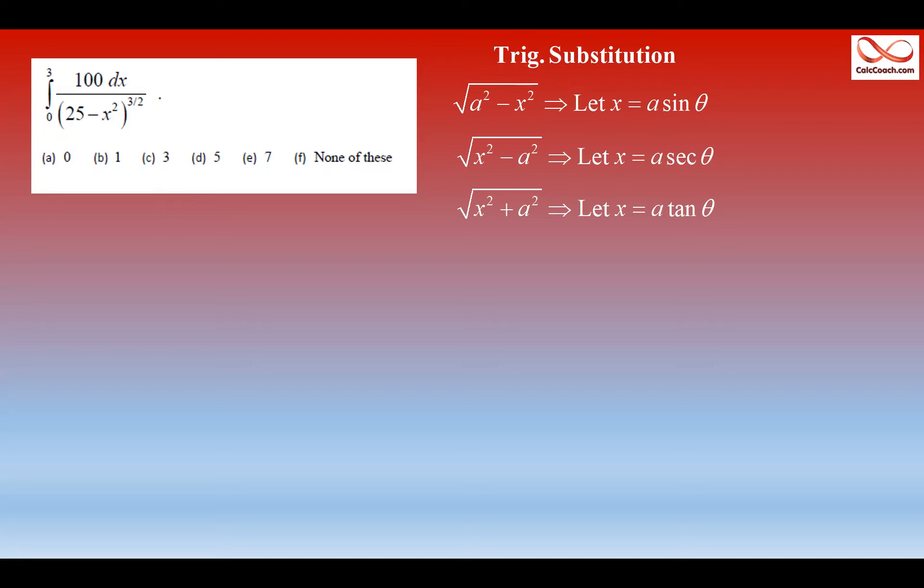So we have to basically recast the three halves power as a square root, and so it's going to be the square root of that 25 minus x squared, then cubed. That's what three halves power is, and so which one of these guys do we have? We have a constant squared minus x squared, so we have the first one, a squared minus x squared, where a is five, the number that you take to square to get to 25.